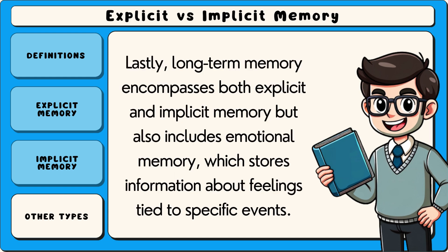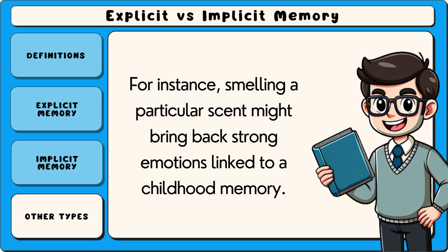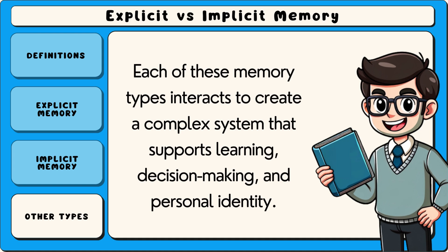Lastly, long-term memory encompasses both explicit and implicit memory, but also includes emotional memory, which stores information about feelings tied to specific events. For instance, smelling a particular scent might bring back strong emotions linked to a childhood memory. Each of these memory types interacts to create a complex system that supports learning, decision-making, and personal identity.